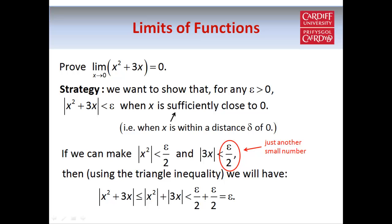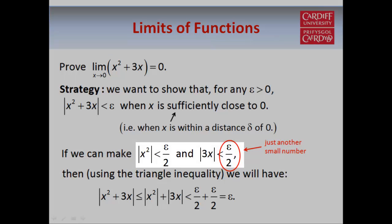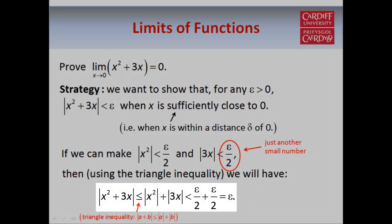The point of the limit definition is that no matter how small epsilon becomes, you can still make f within that distance of the limit L. So if we can show that |x²| < ε/2 and |3x| < ε/2, then we'll be able to use the triangle inequality to say that |x² + 3x| ≤ |x²| + |3x| < ε/2 + ε/2 = ε.